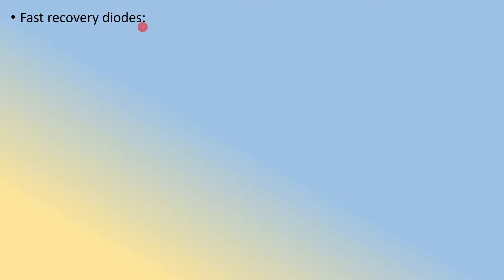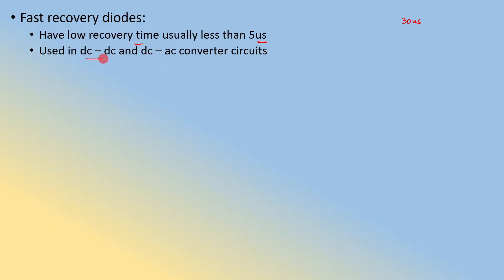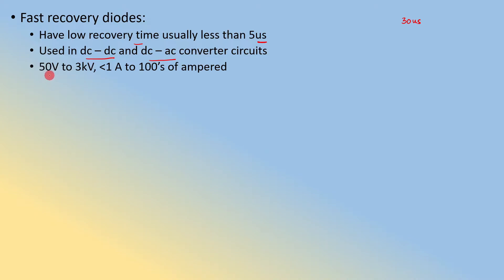The next type is fast recovery diodes. By the name itself, these are diodes with a lower reverse recovery time — they recover very fast. Fast recovery diodes typically have a reverse recovery time of less than 5 microseconds, compared to around 30 microseconds for general purpose diodes. They are used in DC-to-DC and DC-to-AC converter circuits, which we will discuss in future videos. Their voltage range is 50 volts to 3 kV, with current from less than 1 ampere to hundreds of amperes.